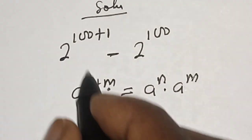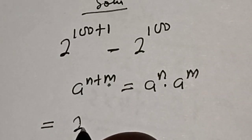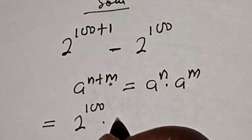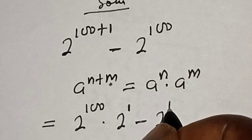So, this is equal to 2 raised to power 100 multiplied by 2 raised to power 1 minus 2 raised to power 100.